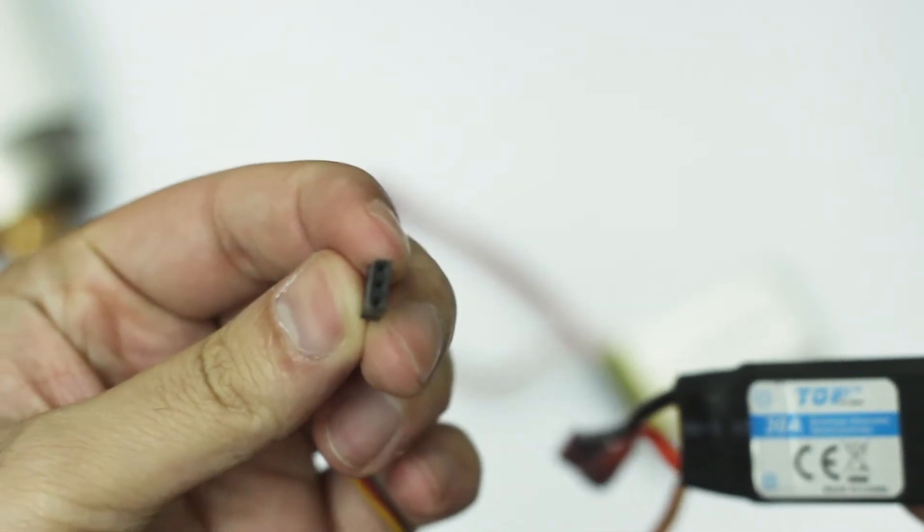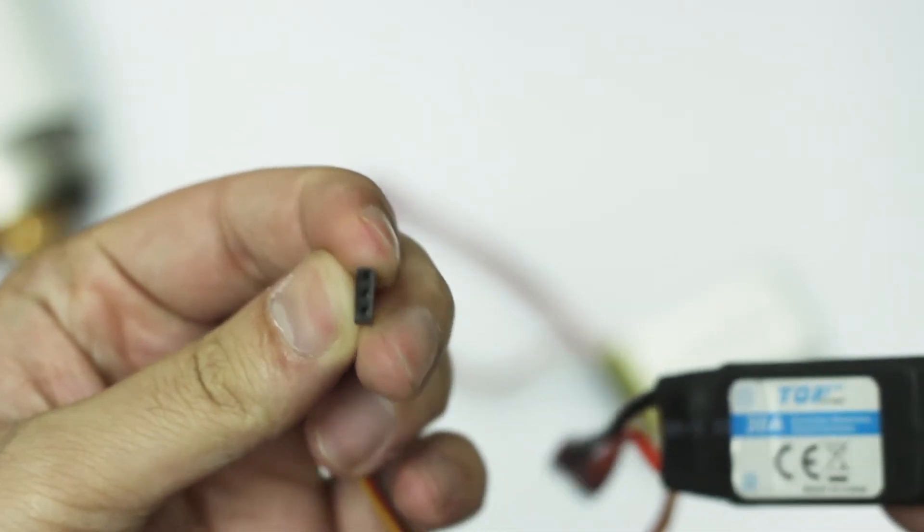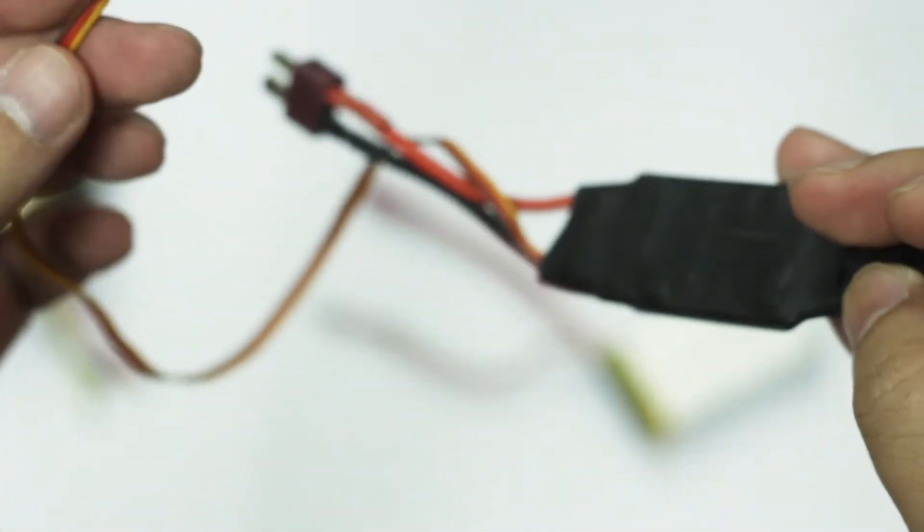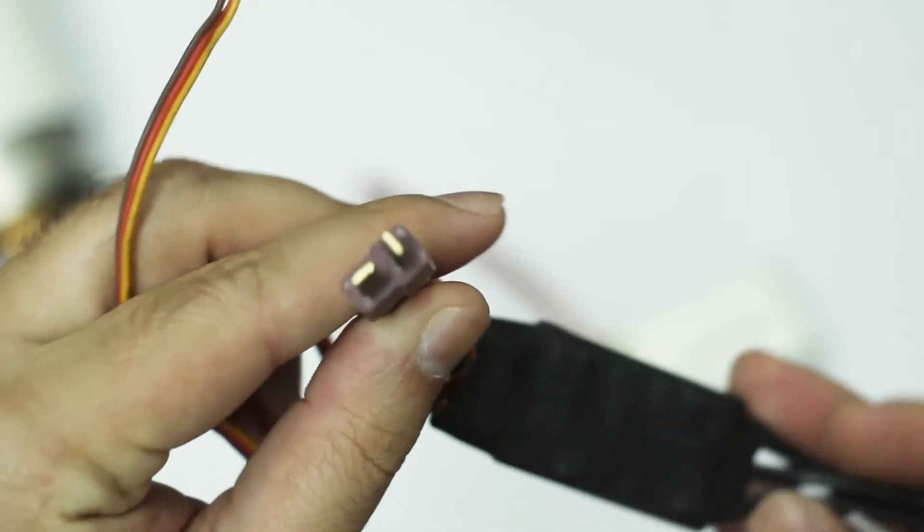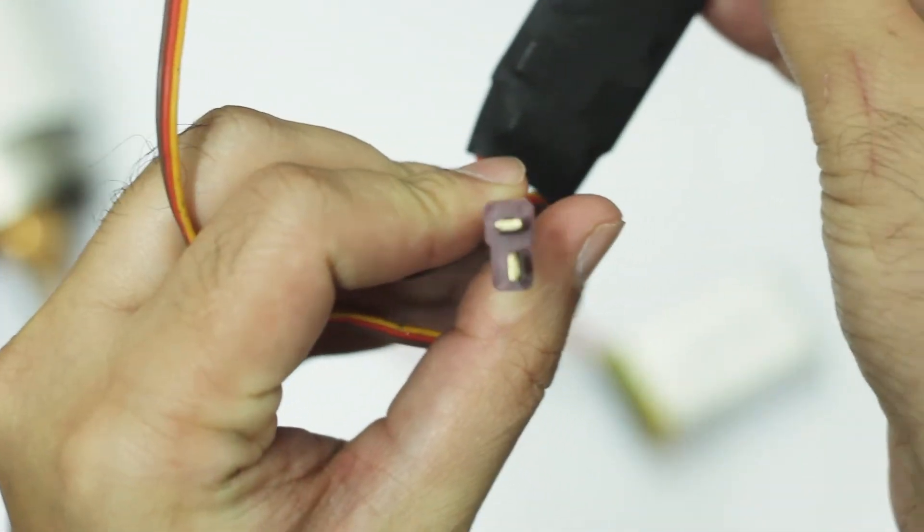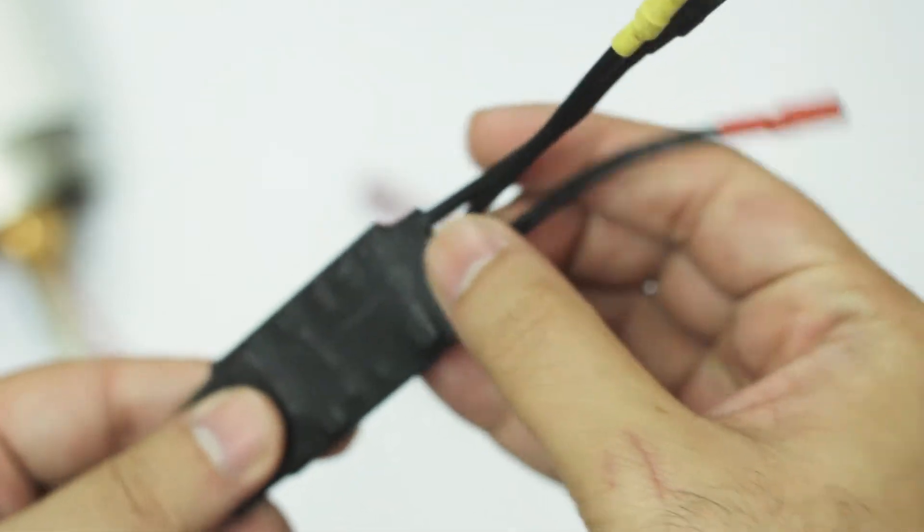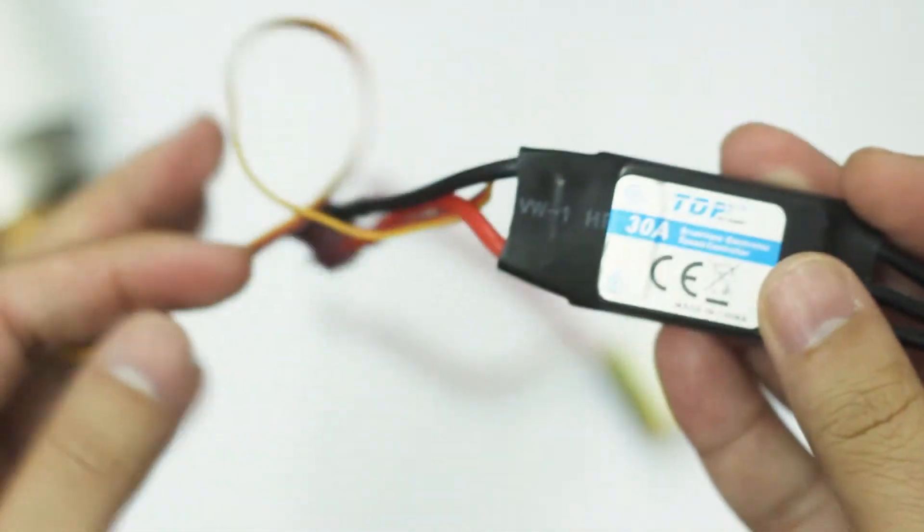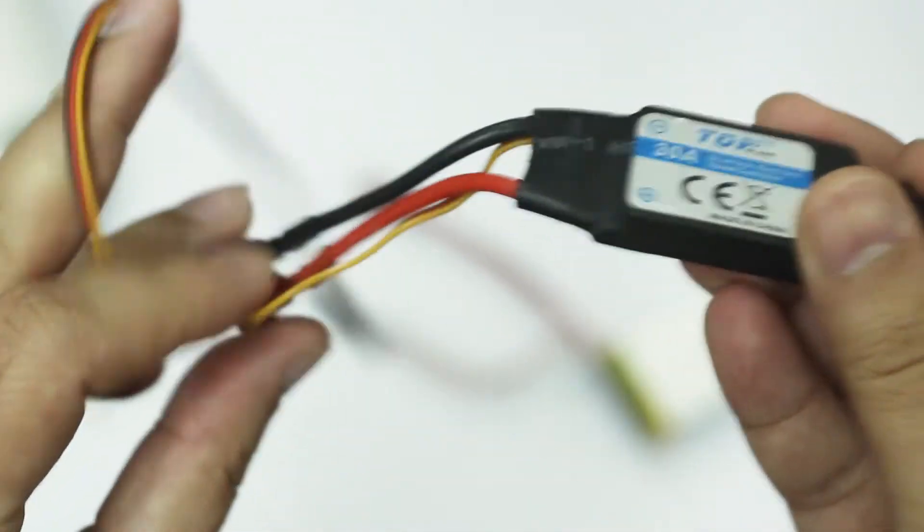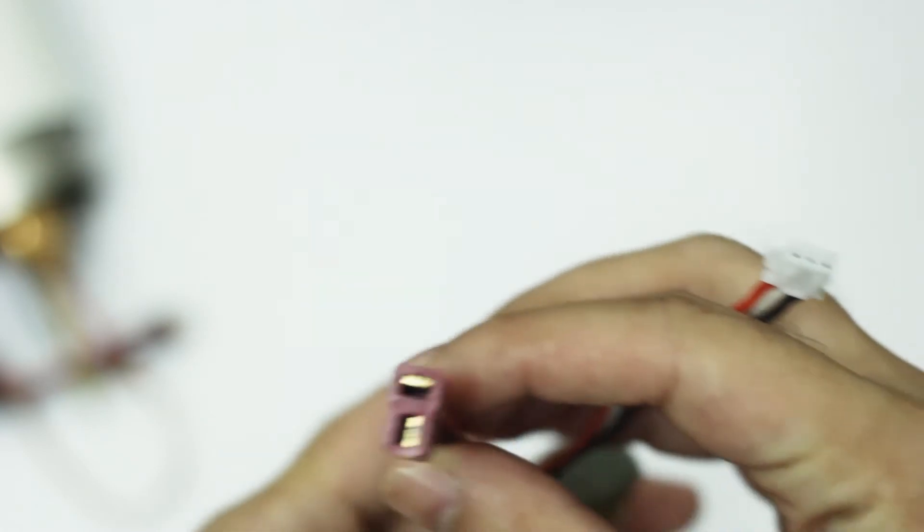The other end has a T connector which will be connected with the battery. As you can see, it looks like a T, that's why it's called a T connector. This end has three wires, this end has two wires plus a servo connection. This is my battery; it also has a T connector. I'm using a two-cell LiPo battery.